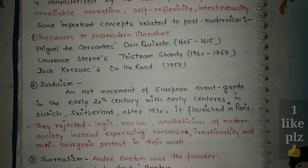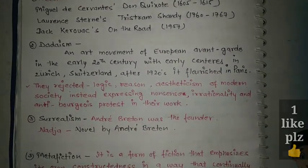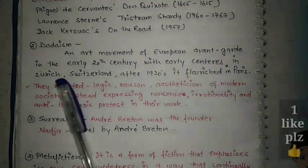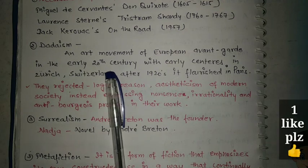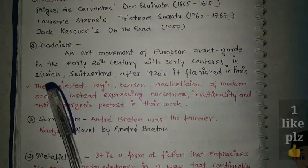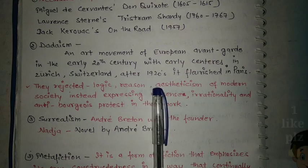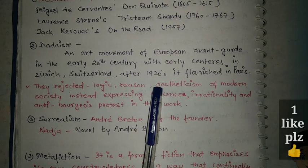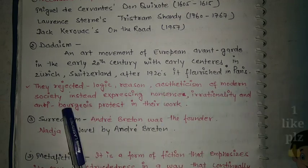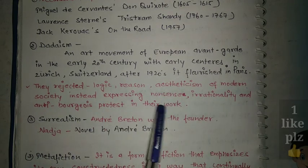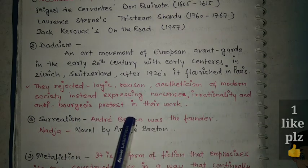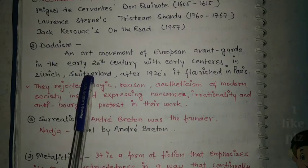The next important concept is Dadaism. It was an art movement of the European avant-garde in the early 20th century, with early centers in Zurich, Switzerland. After the 1920s, it flourished in Paris. Dadaists rejected logic, reason, and aestheticism of modern society.